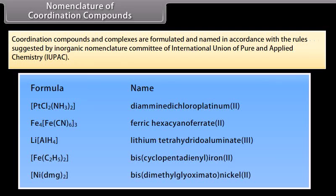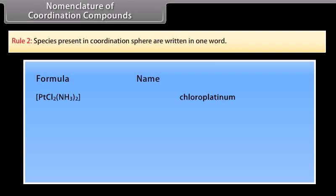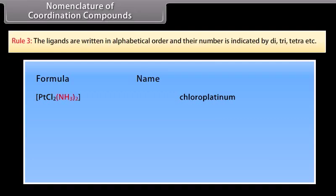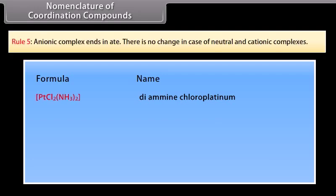Nomenclature of Coordination Compounds. Coordination compounds are formulated and named in accordance with rules suggested by the Inorganic Nomenclature Committee of IUPAC. Rule 1: Cation is named first, followed by anion. Rule 2: Species present in the coordination sphere are written in one word. Rule 3: Ligands are written in alphabetical order; their number is indicated by di, tri, tetra, etc. Rule 4: H2O is named aqua, NH3 as ammine, NH2 as amino, and anionic ligands end in -o. Rule 5: Anionic complexes end in -ate; there is no change for neutral and cationic complexes.